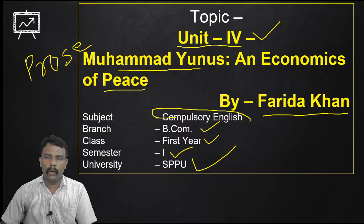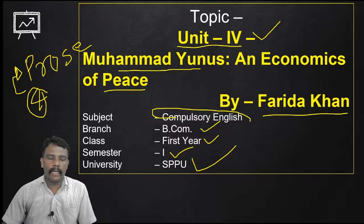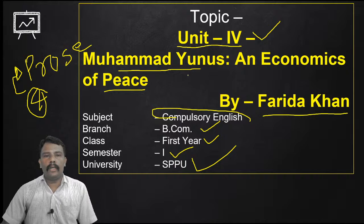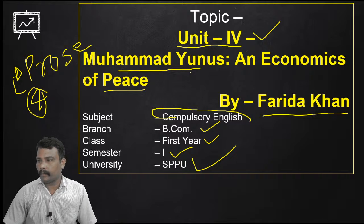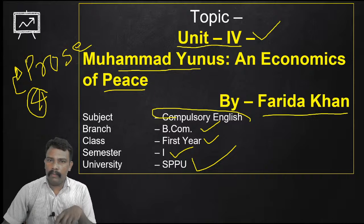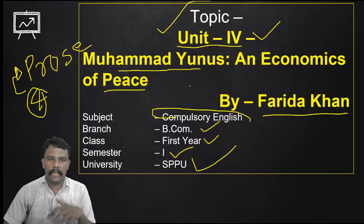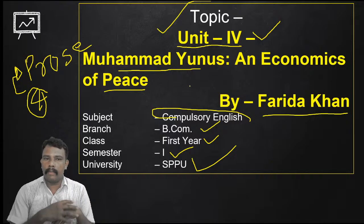There are total only 4 units in prose section. Out of these 4, I am going to discuss Unit Number 4, that is Muhammad Yunus and Economics of Peace. Do you know anything about Muhammad Yunus? Anyone can tell me in the chat box so I can go ahead. Is this clear to everybody? Muhammad Yunus and Economics of Peace — this is an article by Farida Khan. She is the writer of this particular article. In this article, we are going to discuss about Muhammad Yunus.